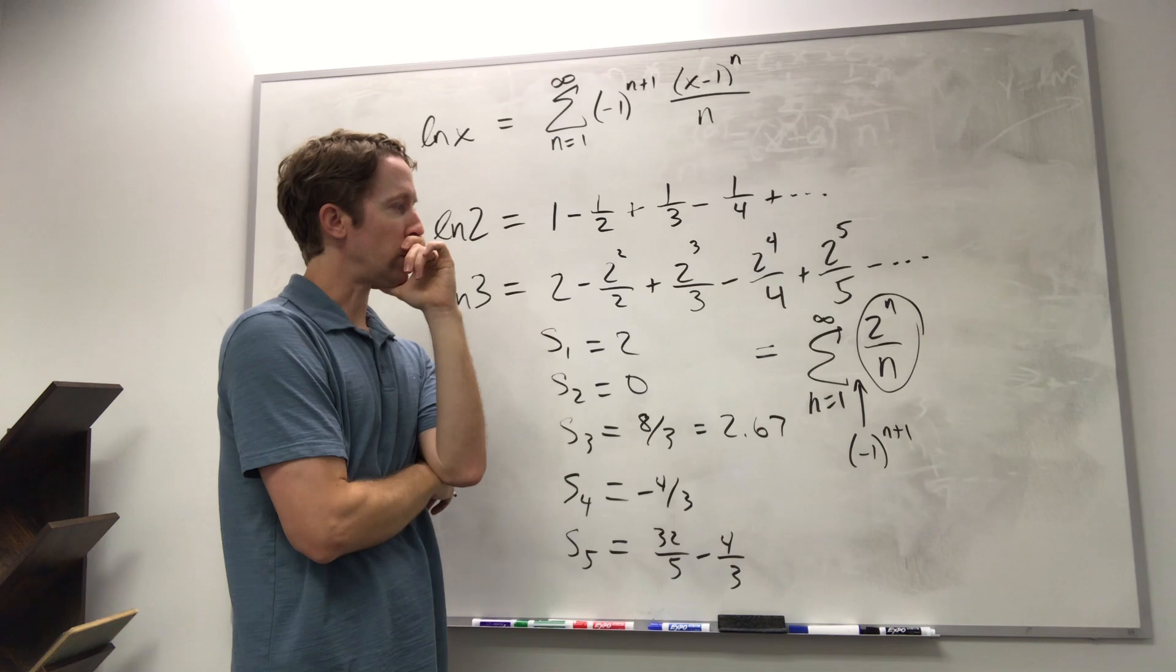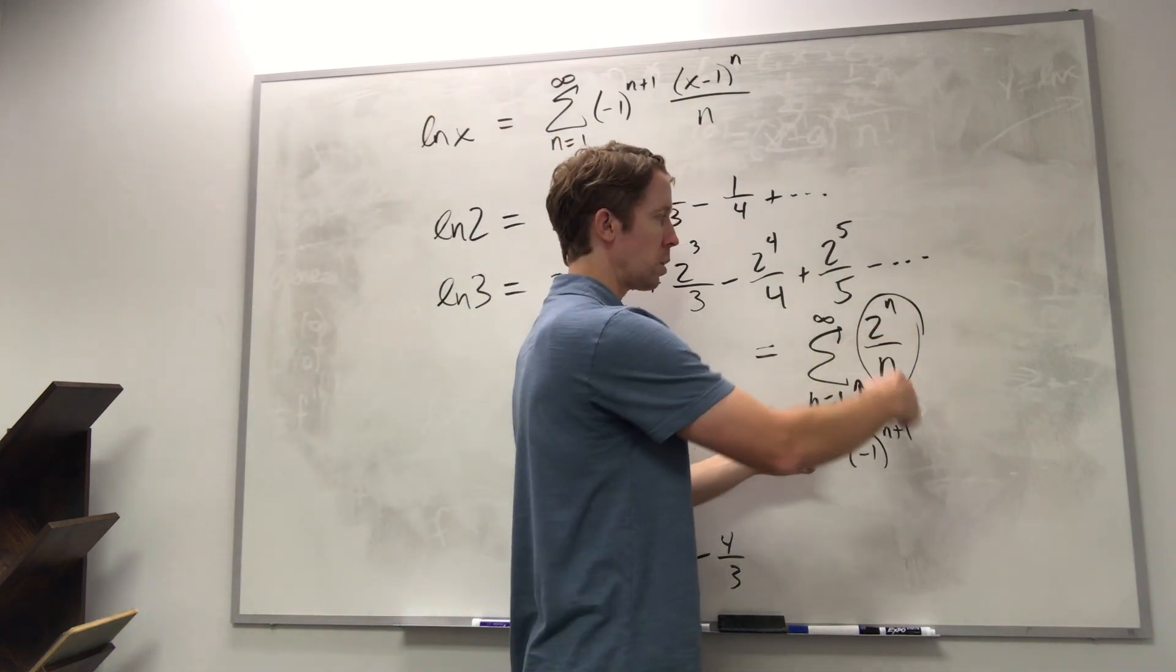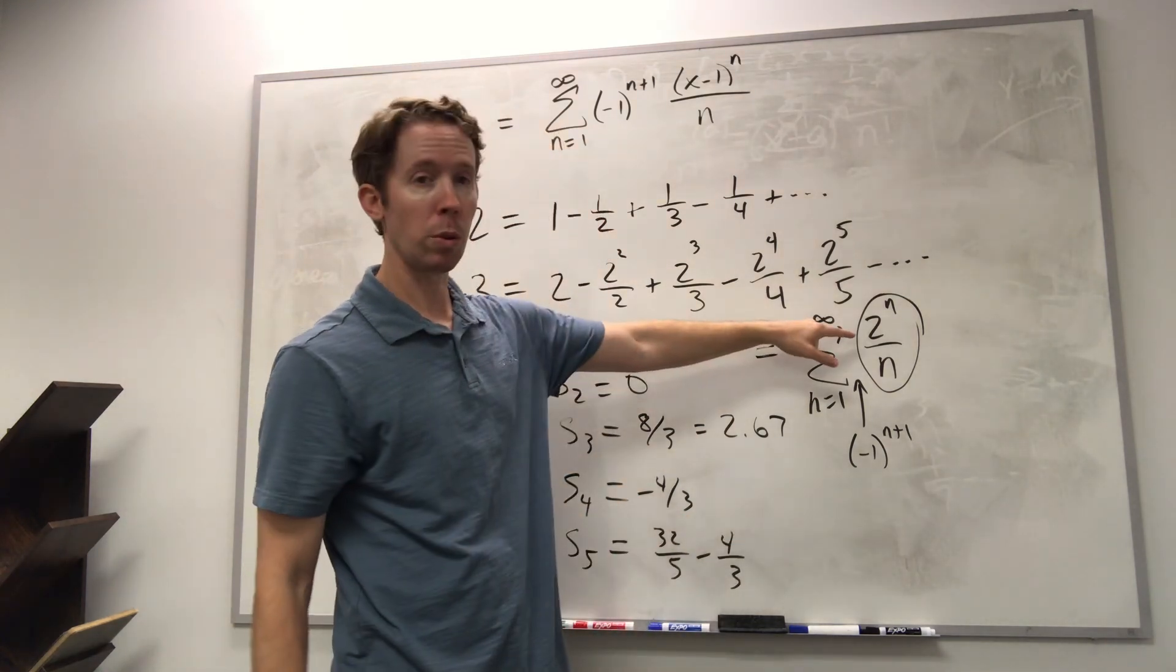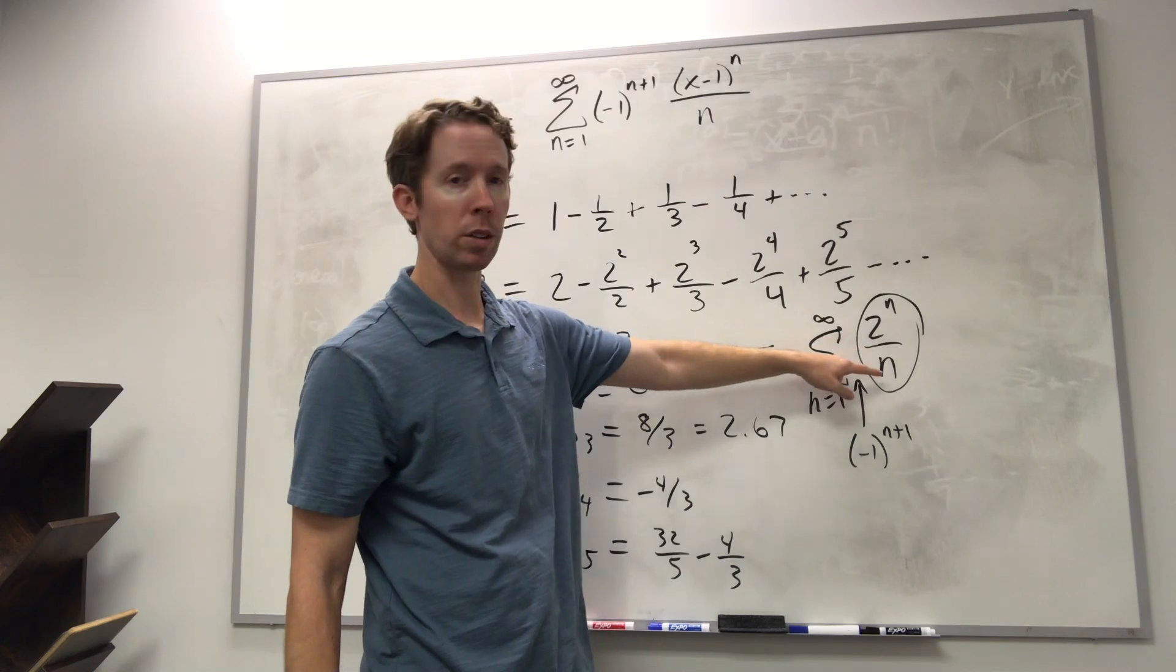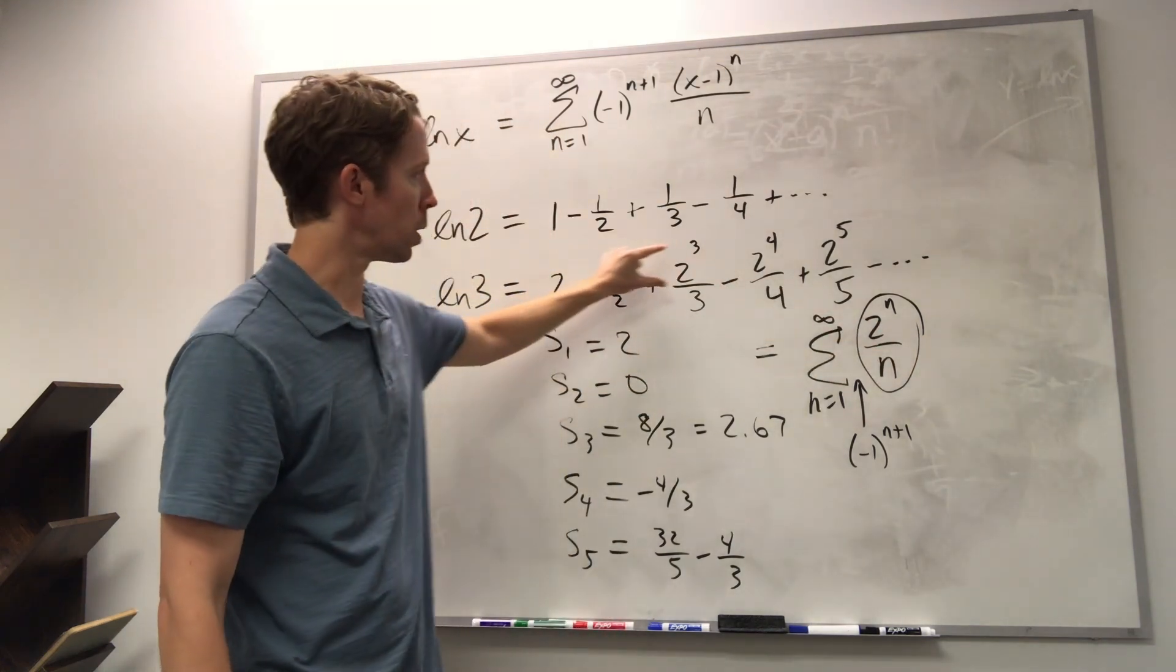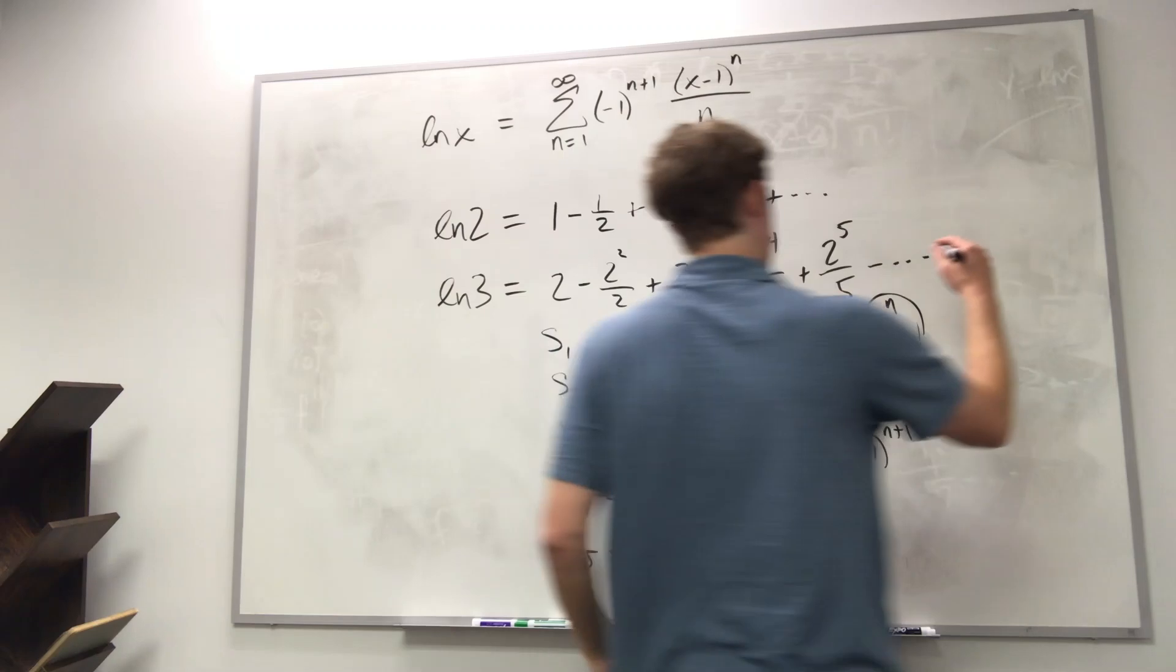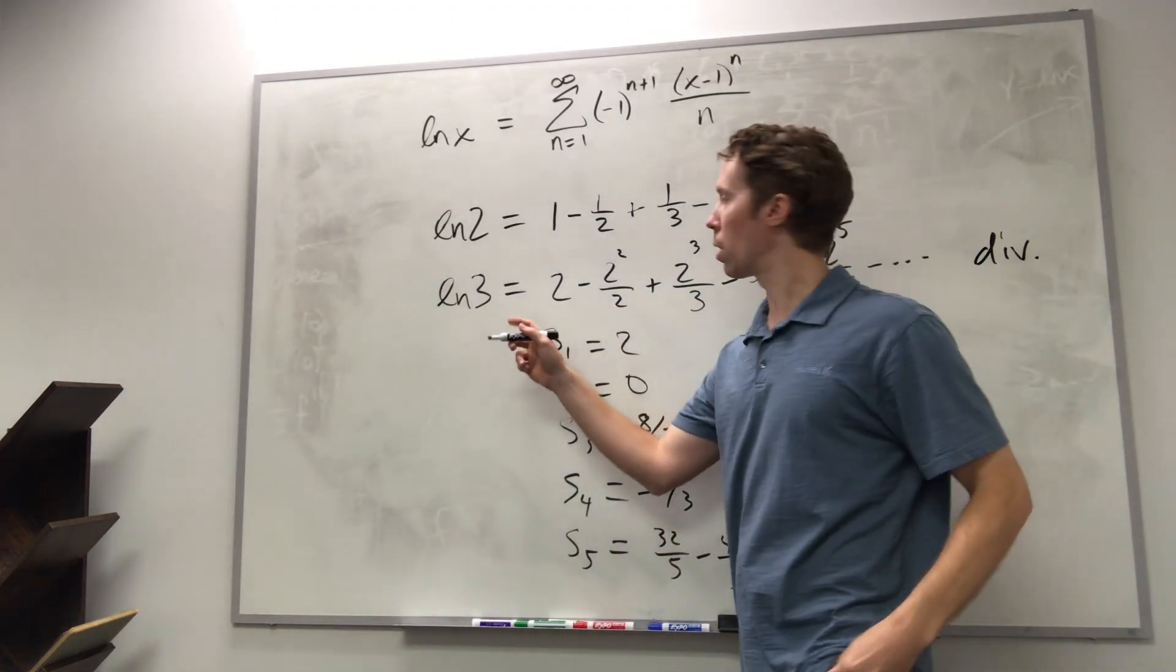So what I want to do is be able to take the limit of just this sequence of numbers, and of course what we would see if we did that here is that two to the n is growing faster than n, so this whole thing is not shrinking down to zero in the limit. That's exactly what we observed here. So this diverges, it is not equal to natural log of three.